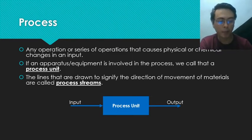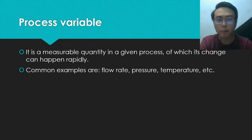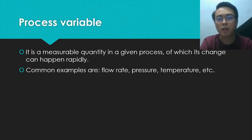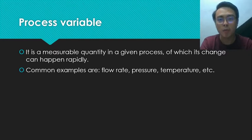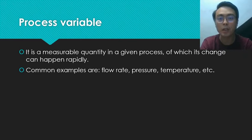Now let's define what a process variable is. A process variable is a measurable quantity in a given process of which its change can happen rapidly. This will be the bulk of our discussion, because process variables are often the ones we are solving for or the ones that are given or unknown. Some common examples are flow rates, pressure, temperature, volume, and mass — anything that is measurable and controllable in a real-life plant.